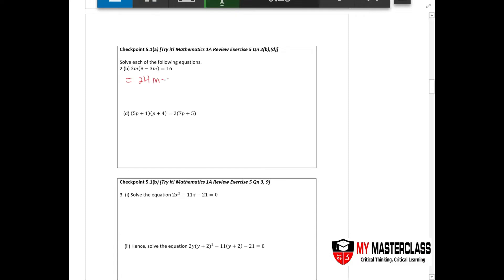24m minus 9m square equals to 16. You realize that this is actually a quadratic function so you bring it over to the other side. Make sure to bring your signs properly because this is a very common mistake that students always make. So once you have done this portion, what do you do? You factorize.